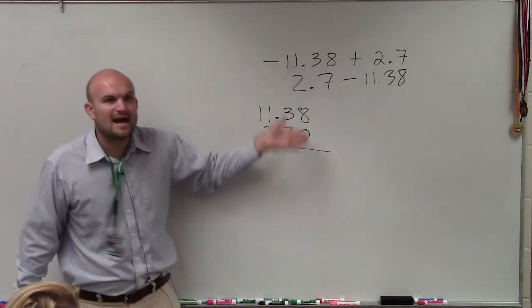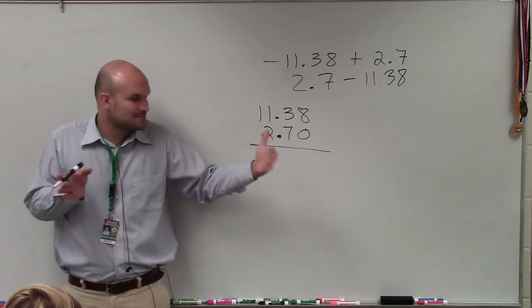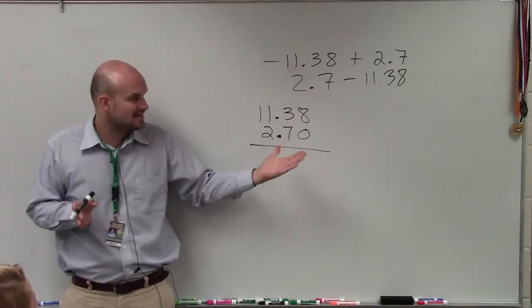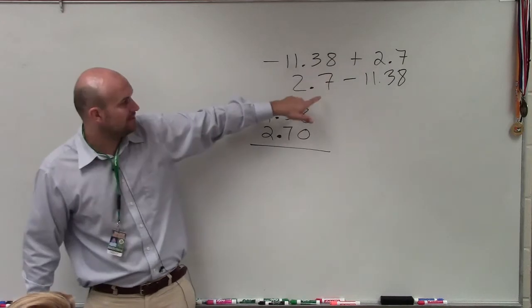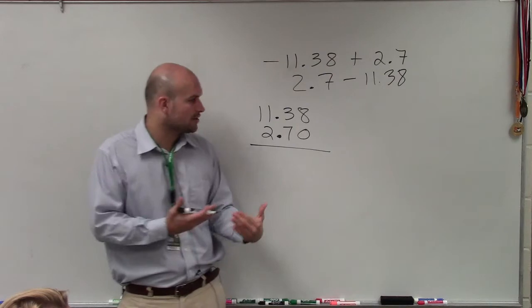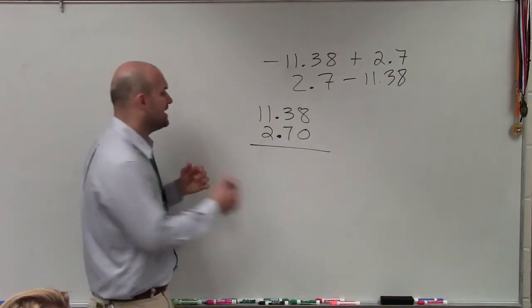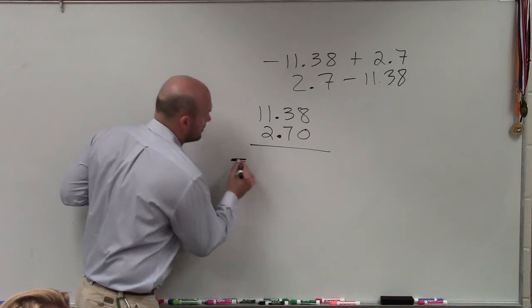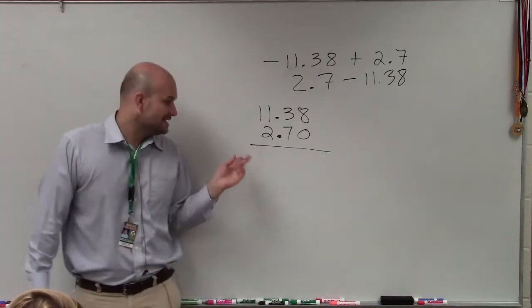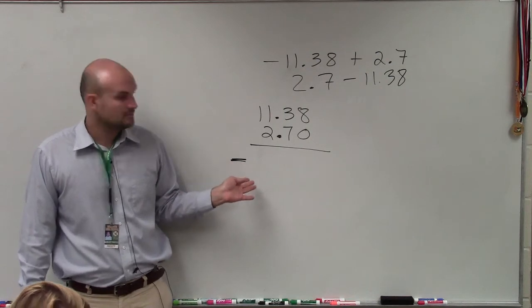So it doesn't really matter which way I subtract these. I know that the absolute distance between them is still going to be the same. But the original problem I know is going to be negative. So what I'm going to do to apply my subtraction algorithm is I'm always going to subtract the larger from the smaller. But I know that my answer is going to be negative.